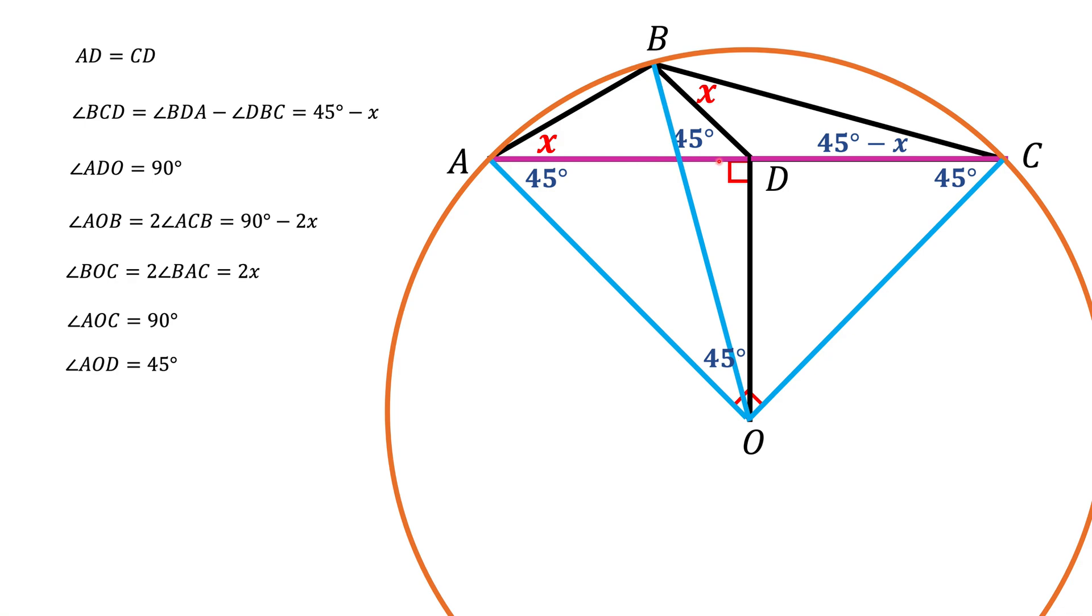But now we got a triangle ADO which has two angles of the same measure. That means that this triangle is an isosceles triangle, and DO should be the same length as AD. Now let's look at this angle BDO. This angle is 45 plus 90, it's 135. But if you look at this angle BDC, it's 180 minus this 45, and it's also 135 degrees. So we got this angle and this angle which are congruent to each other.